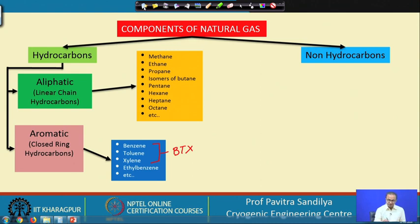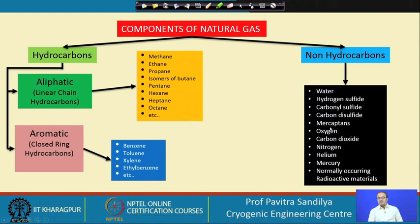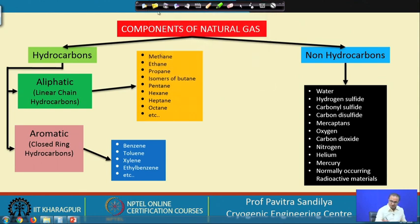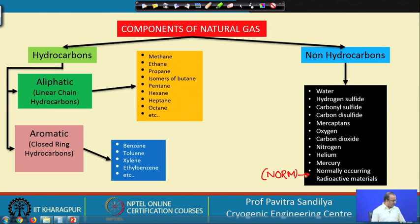After hydrocarbon components, we have some non-hydrocarbon components. These include water, hydrogen sulfide, carbonyl sulfide, carbon disulfide, mercaptans, oxygen, carbon dioxide, nitrogen, helium, mercury, and normally occurring radioactive materials — the last of which is sometimes abbreviated as NORM. Helium is produced from natural gas and is a very important gas because it is used in superconductivity.